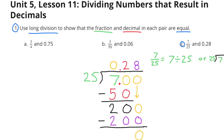C. 7 twenty-fifths and 28 hundredths. 7 twenty-fifths means 7 divided by 25. Since 25 is too large to go into 7, I put a 0 in the ones place and put in the decimal. Then I asked how many times does 25 go into 70? 25 goes into 70 twice. 2 times 25 equals 50, and 70 minus 50 gives a remainder of 20. I bring down a 0 and ask how many times does 25 go into 200? 25 goes into 200 eight times. 8 times 25 is 200, and 200 minus 200 gives a remainder of 0. So 7 divided by 25, or 7 twenty-fifths, equals 28 hundredths.